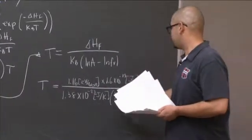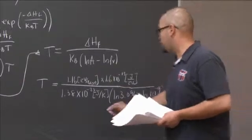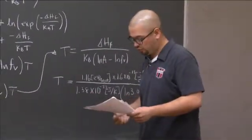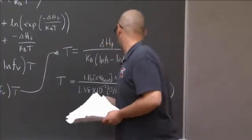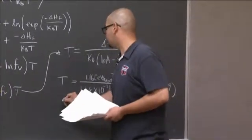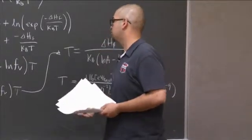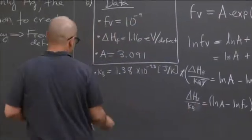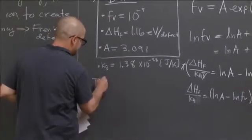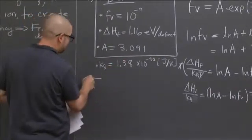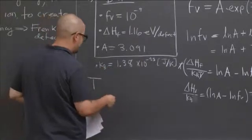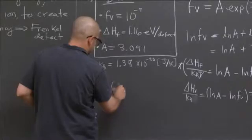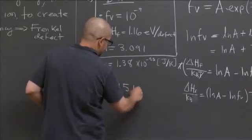Then I put in 1.38 times 10 to the minus 23 joules per Kelvin. This factor is multiplied by the natural log of 3.091 minus the natural log of 10 to the minus 9. So if you do the math out, you end up getting a value that your temperature will be equal to, now that we do the math, 615 Kelvin.